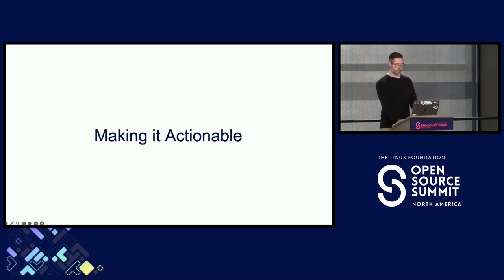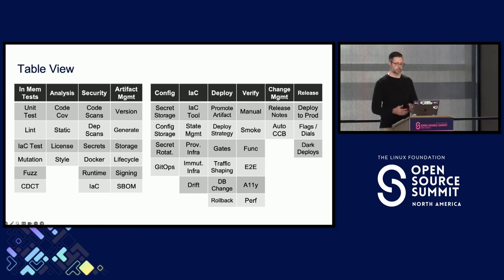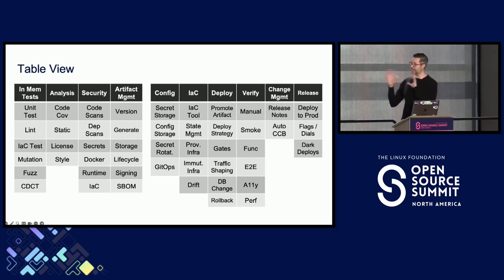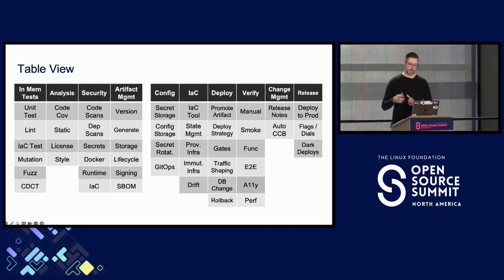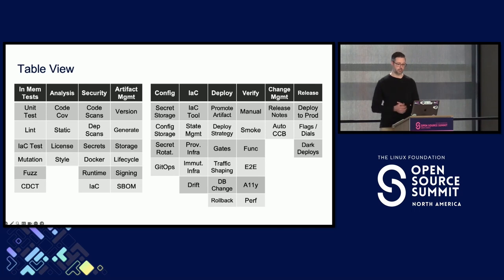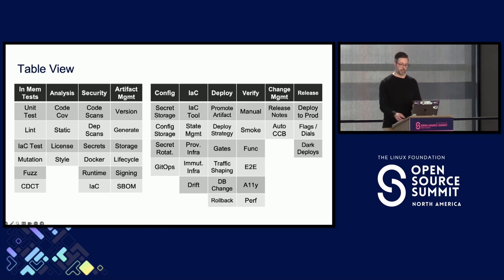The first thing we're going to do is make it actionable. We have an HTML view in our documentation. We've basically taken all of our whiteboarding and formalized it into static documentation. It's similar to what we saw before — CI on the left and CD on the right. You can click into each one of these and read more about it; there's documentation accompanying each of these capabilities. There's a write-up for each, and it becomes a kind of self-service way to learn about each one of them.